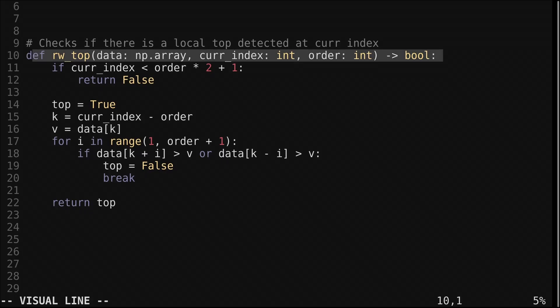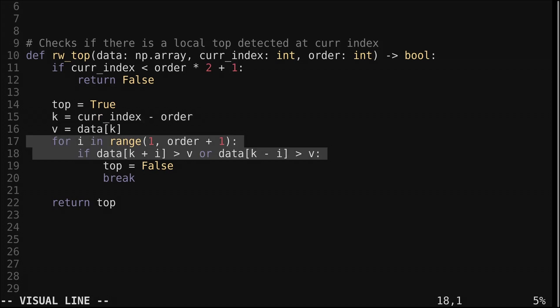Let's look at the code. This function checks if there is a top of a given order confirmed at the current index. The index of the potential top is delayed by the order given to avoid looking into the future. We check if there is a point that is greater than it on either side. If there is not, we have found a top.